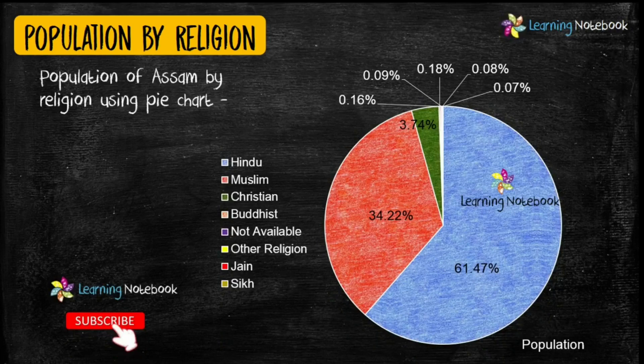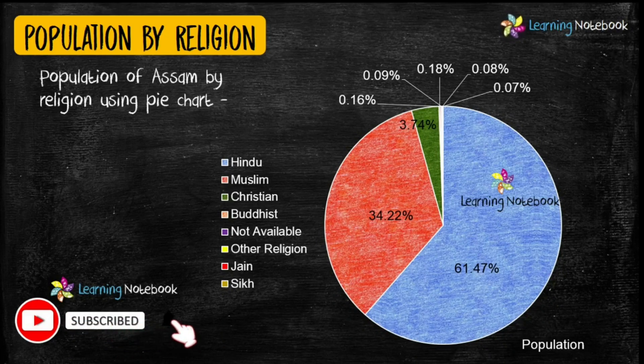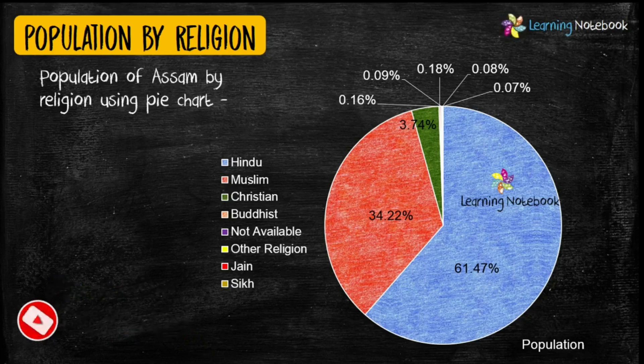A pie chart is another beautiful way to represent the given data. So, you can show the population of Assam by religion using a pie chart.